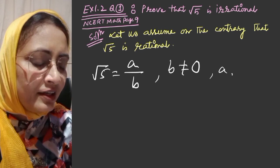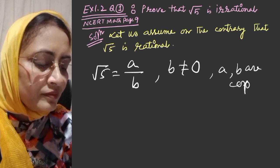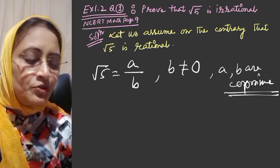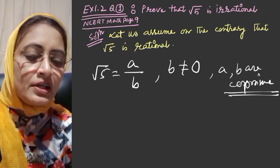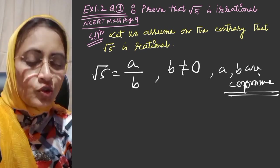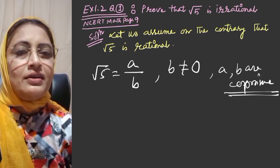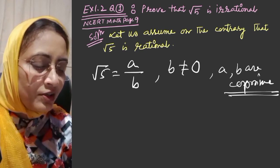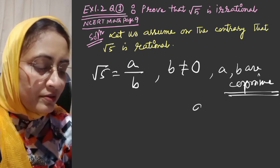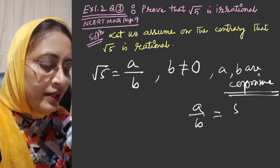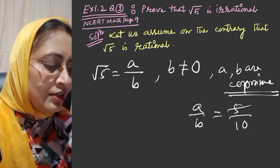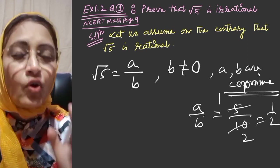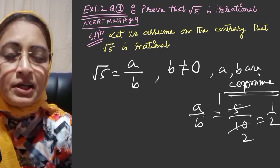Coprime means there can't be a factor which is common between a and b. If a and b are not coprime, then we'll cancel out the common numbers. For example, if we have 5 by 10, then 5 divides both, so we cancel to get 1 by 2.